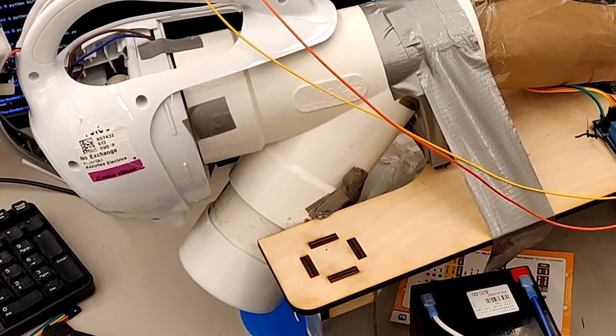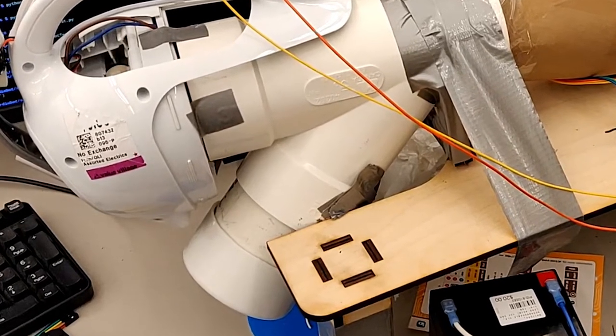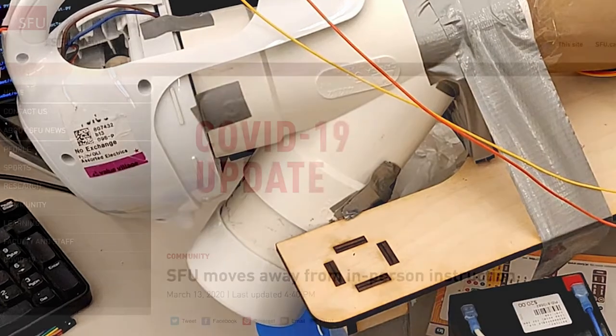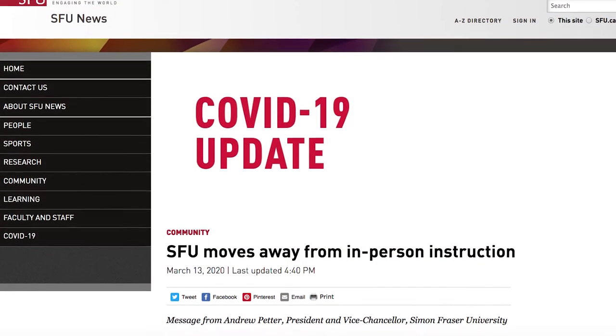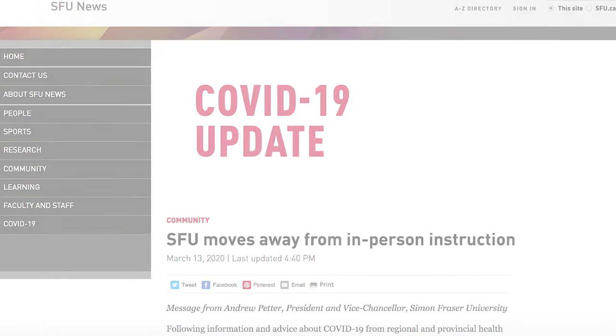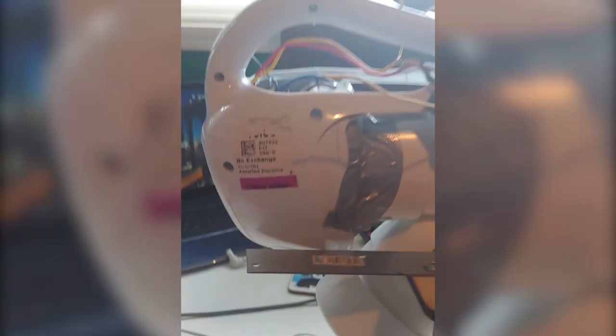Ideally, we would have just printed a new, longer base that had more support for the back of the vacuum, but due to the current COVID-19 pandemic, we were unable to use these facilities. Instead, we screwed metal strap ties to the edge of the base and used these to support the weight of the vacuum. We also added a wood block at the end of the strap ties to give the vacuum the proper angle to suck the shuttlecock in.